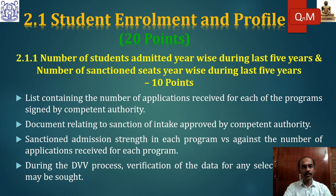The first key indicator is Student Enrollment and Profile, which carries 20 points. Point 2.1.1 covers the number of students admitted year-wise during the last five years and the number of sanctioned seats year-wise during the last year.